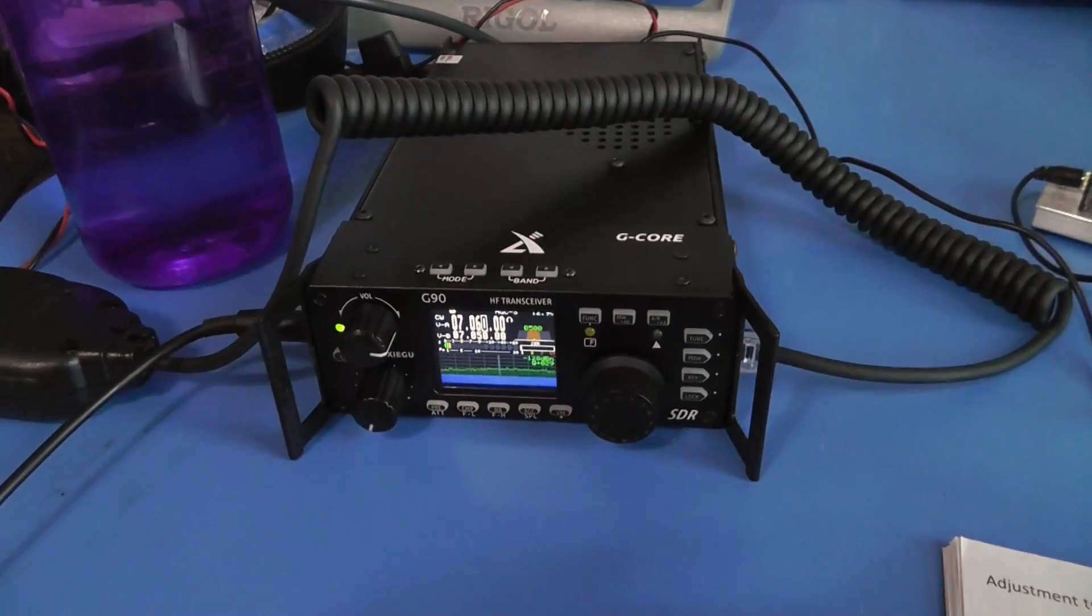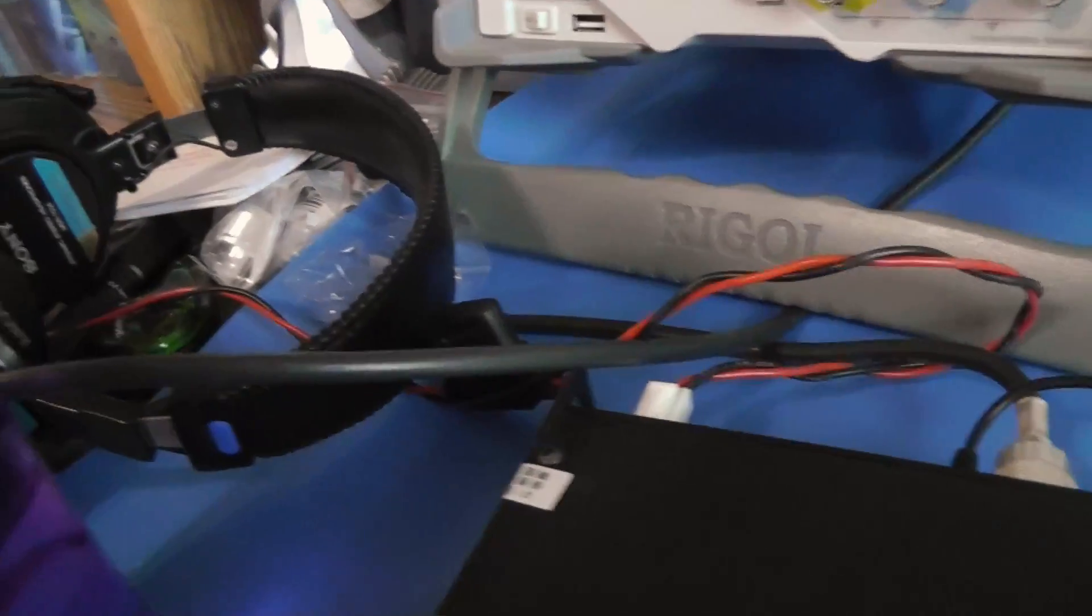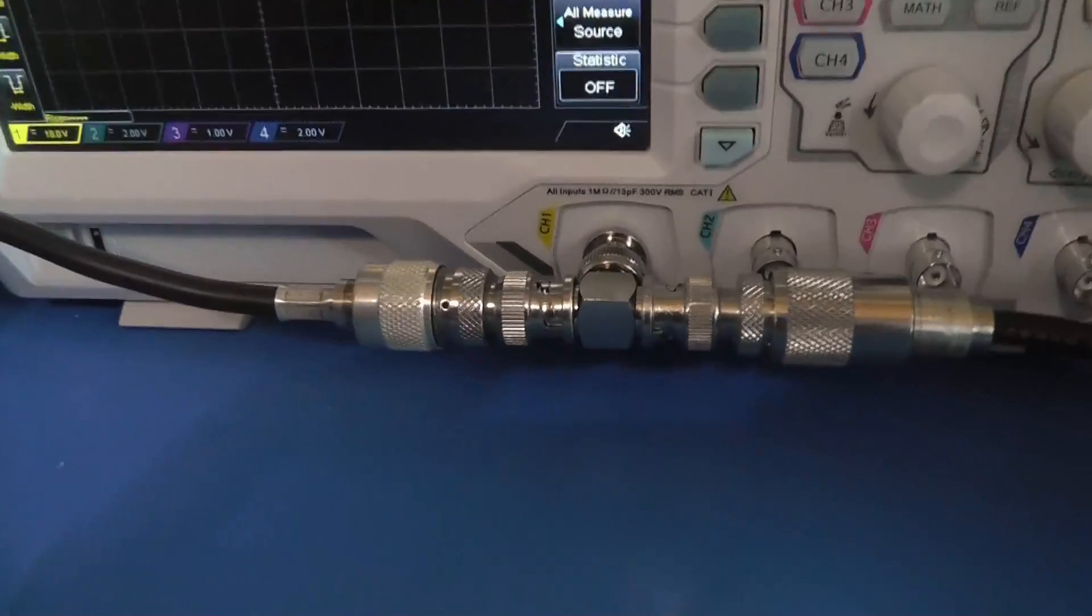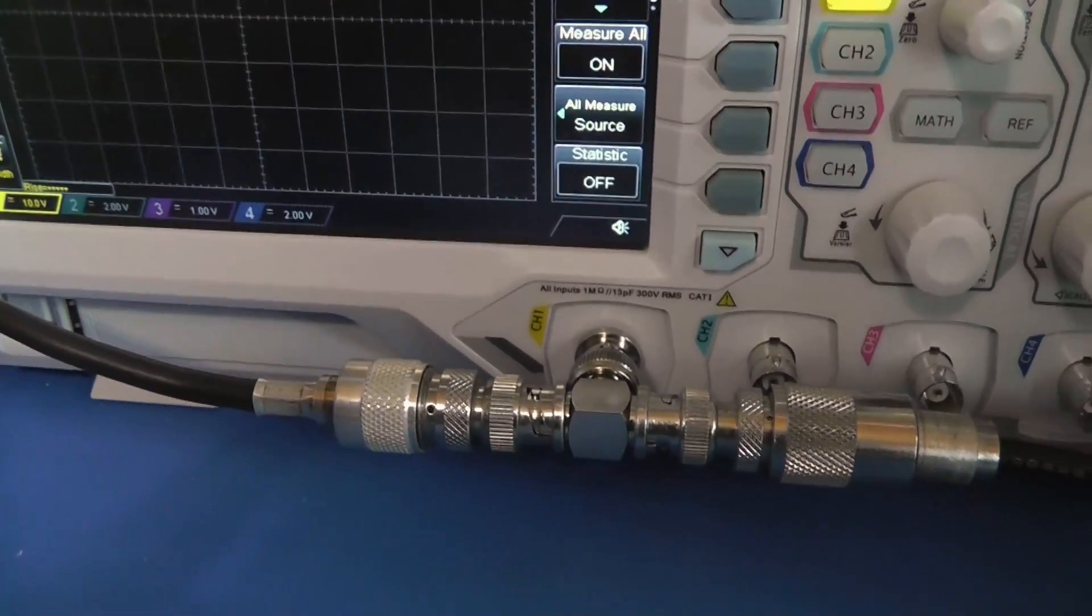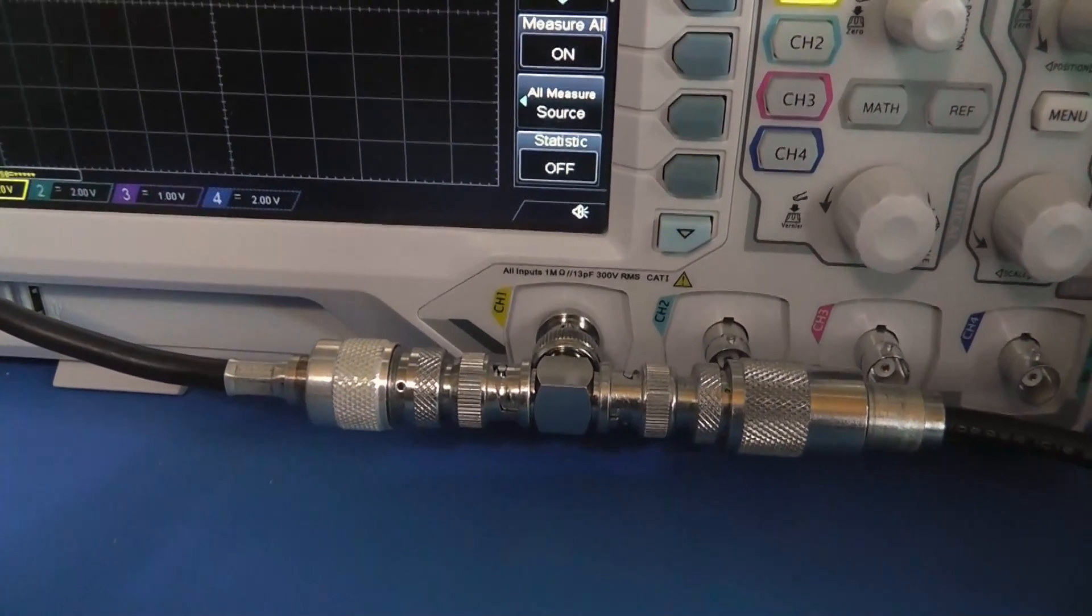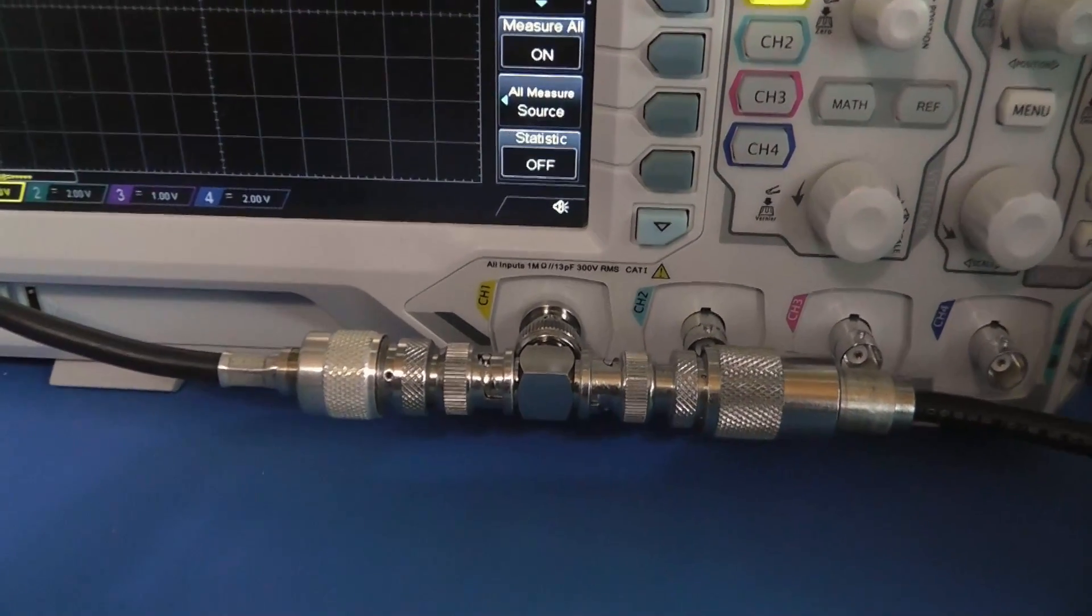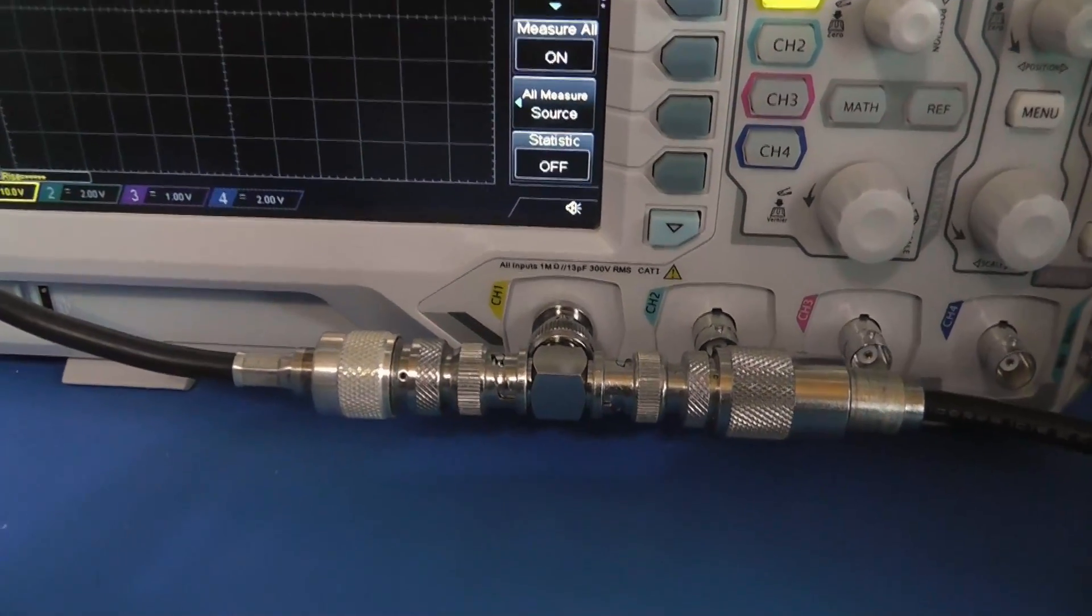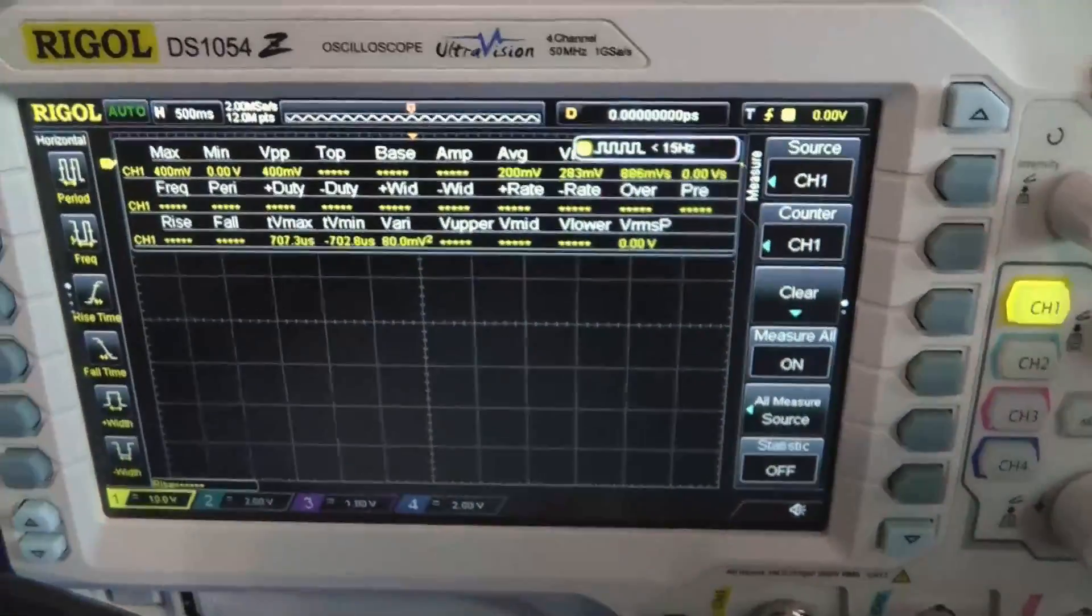So let me show you the test setup. Here's the G90, it's being powered by this bio-enno lithium-ion battery, and then I have the output of that going over to where it is tapped into the scope. This is the oscilloscope and that's a high impedance tap so it's not in any kind of a load. The Rigol scope will take up to 300 volts and we're not getting anywhere near that. So if I tap on it...